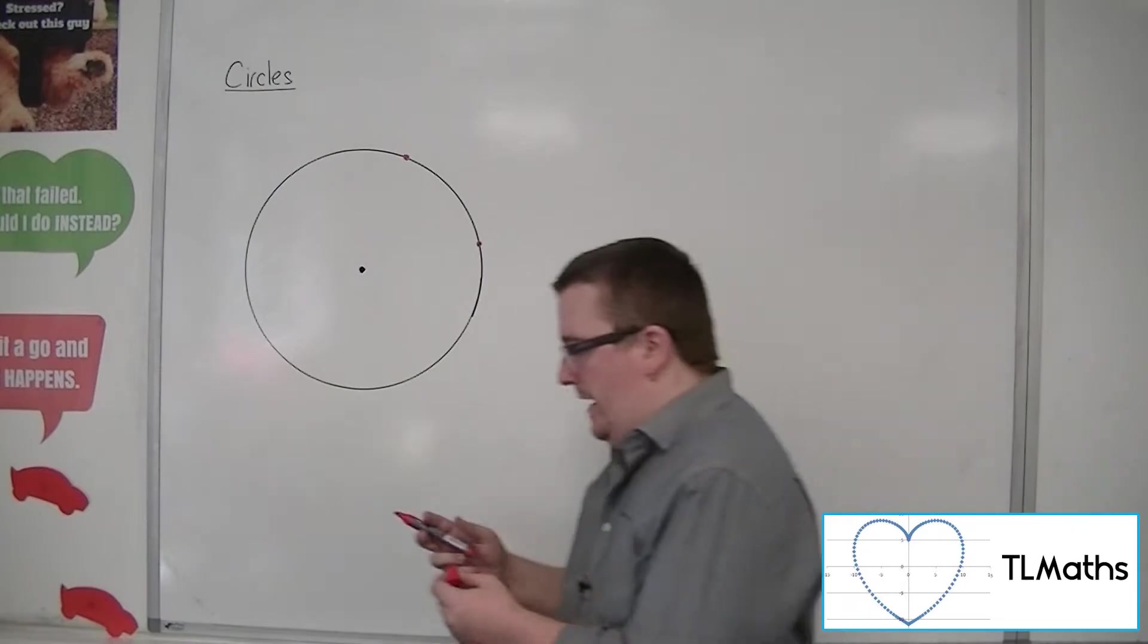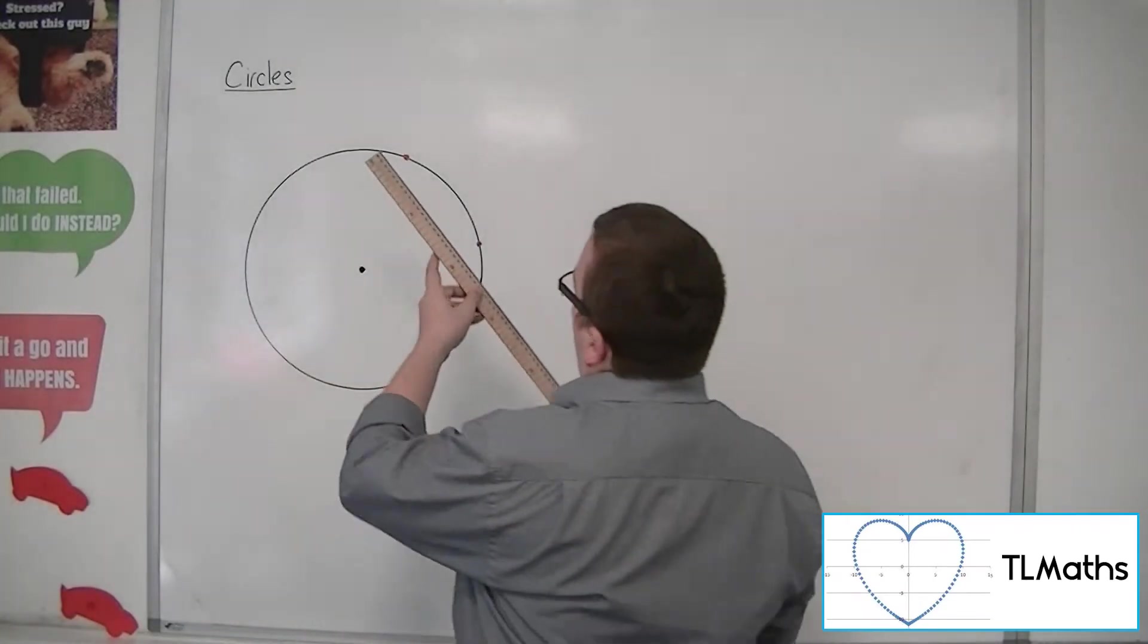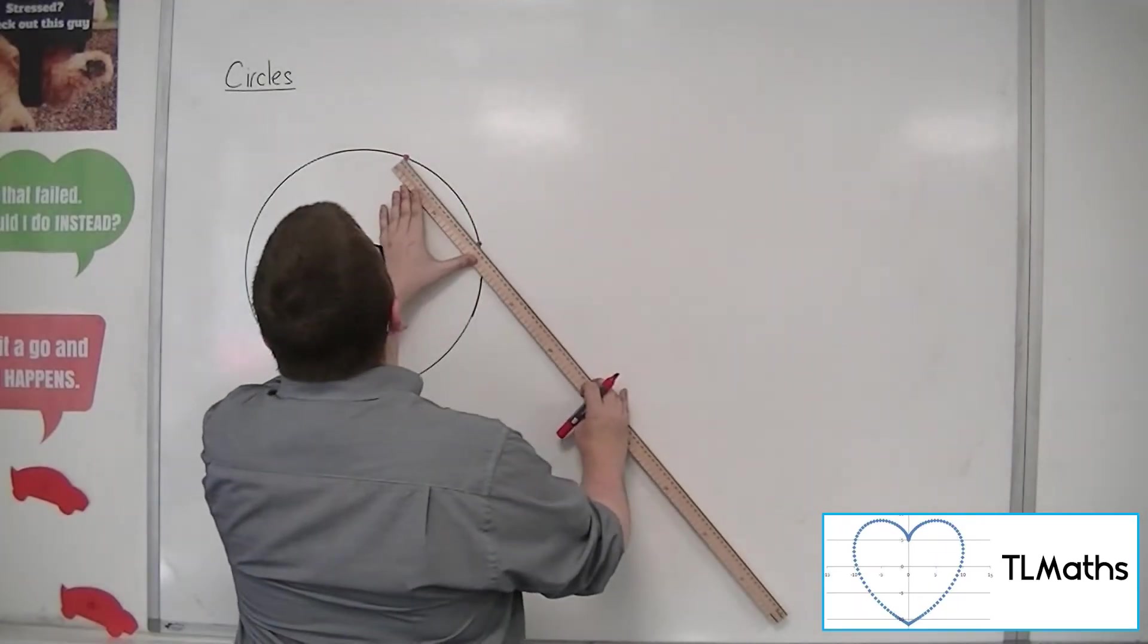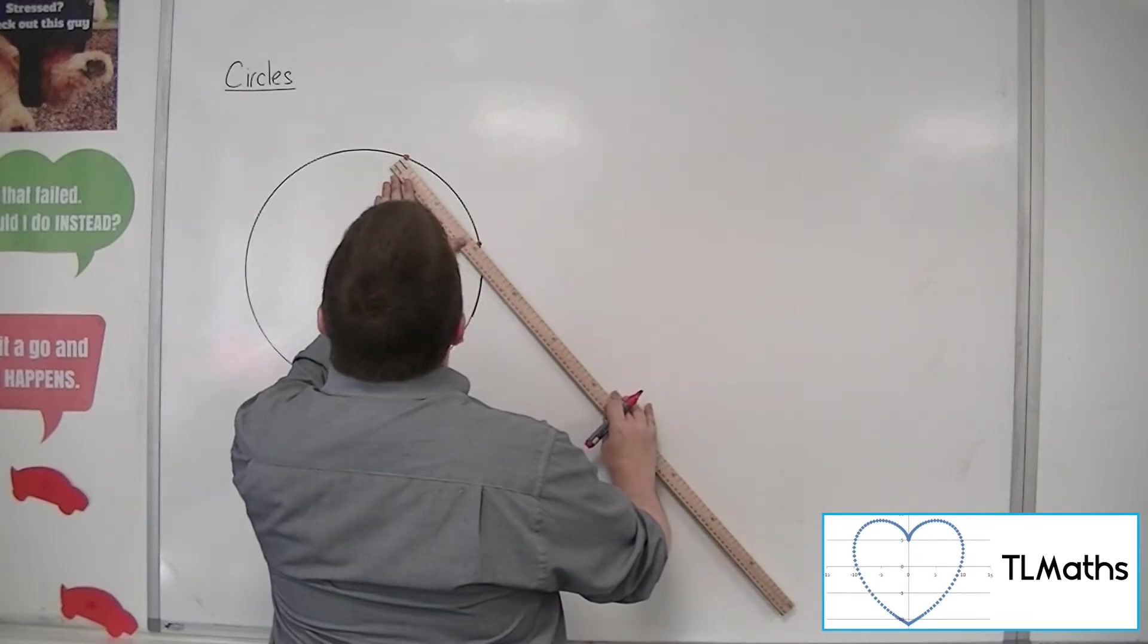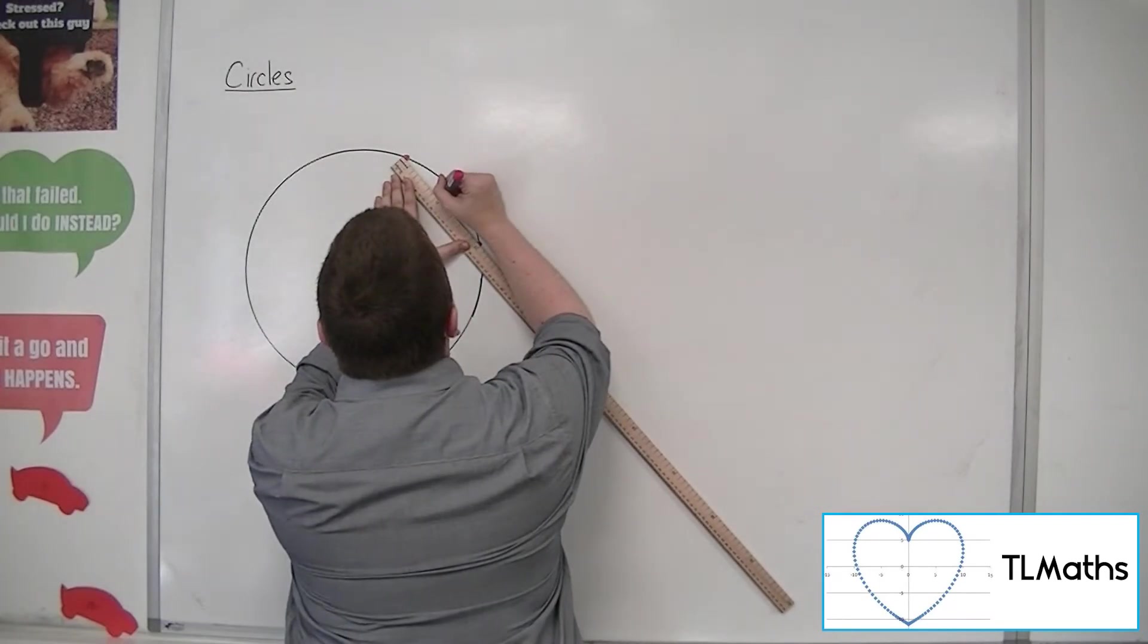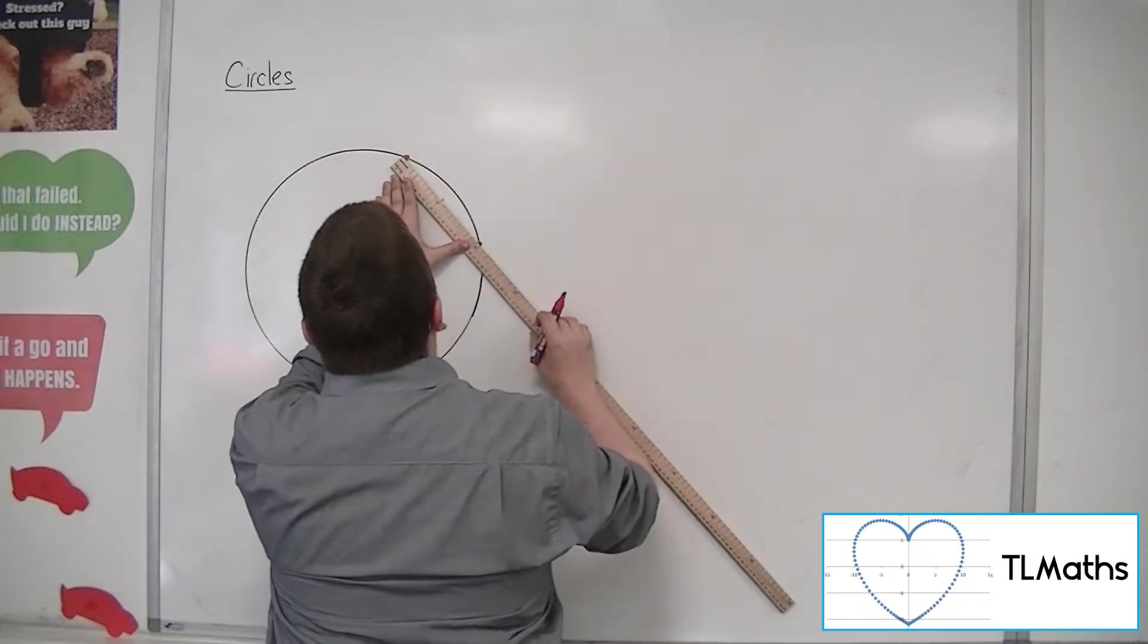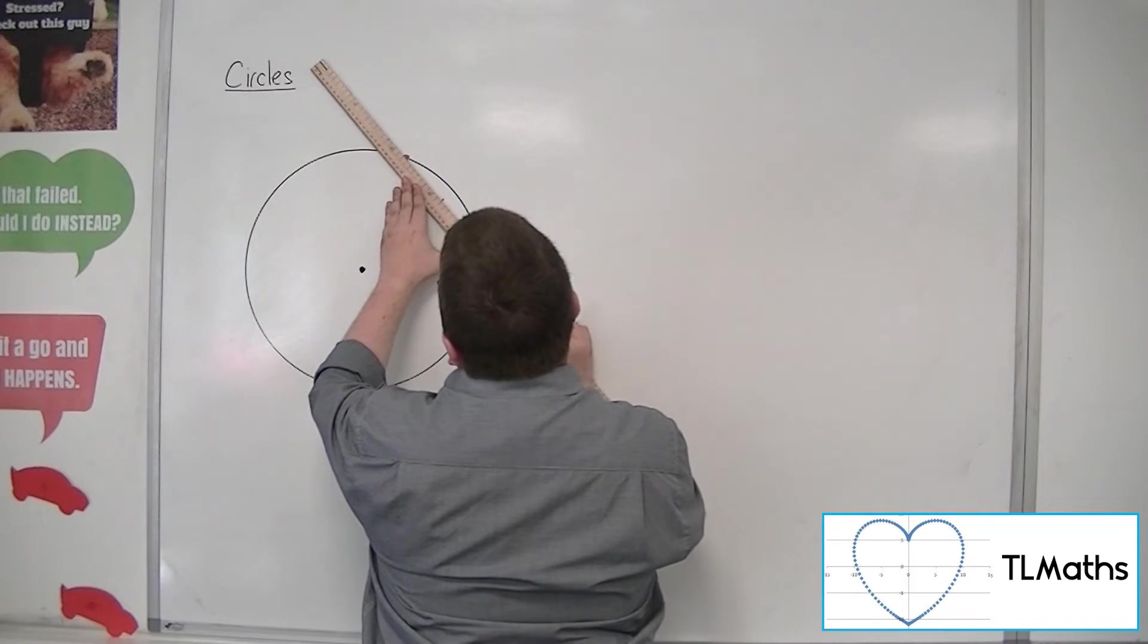and then you find the perpendicular bisector of those two points. So what we've got here is about 20 centimeters, so let's pop it in the middle there, 10. So perpendicular bisector, let's draw the line as well,